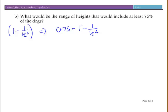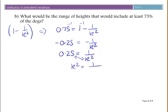If I take away 1 from both sides, I get negative 0.25 equals negative 1 over k squared, or 0.25 equals 1 over k squared. Swap these, and I get k squared equals 1 over 0.25. K squared equals 4, so k equals plus or minus 2.